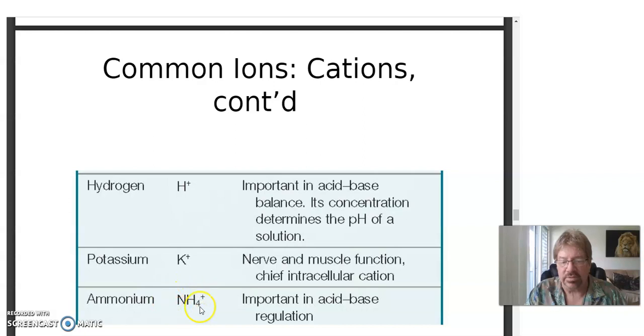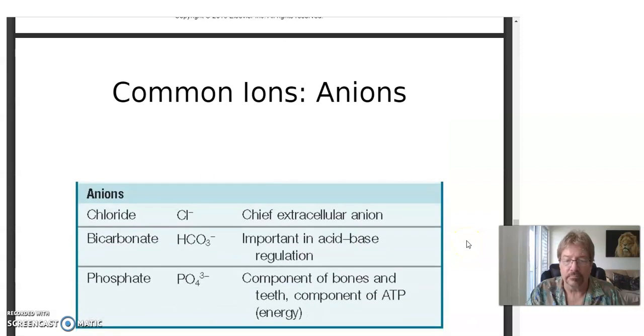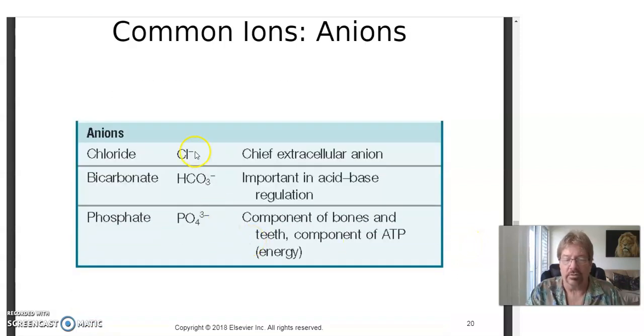Most ions are elements like this hydrogen ion, this potassium, but some are molecules like ammonium ion, important in acid-base balance. We'll talk about that soon. Common anions: chloride, bicarbonate ion HCO3 minus. Here's another molecular ion, phosphate, phosphorus atom and four oxygens. These are anions, negative ones found in bones and teeth.